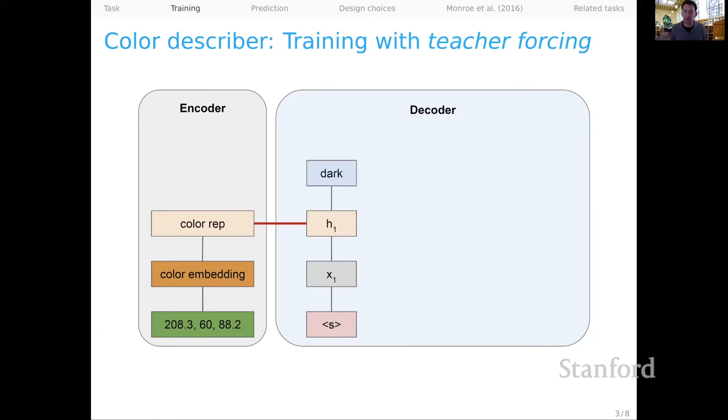Then we use some softmax parameters to make a prediction about the next token. Here we've predicted dark. And we get our error signal by comparing that prediction with the actual token that occurred in our training data. In this case, it was the word light. So since we've made a wrong prediction, we're going to get a substantive error signal that will then, we hope, update the weight parameters throughout this model in a way that leads them to produce better generations the next time.